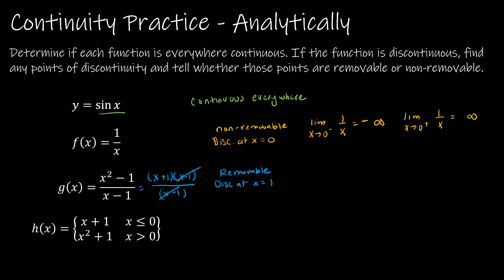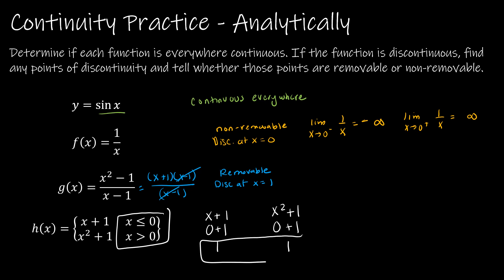To determine what happens at x equals 0, I look at what happens on the function from the left when I plug in 0 — I get 1. And what happens on the function from the right when I plug in 0 — I also get 1. Because those two things are equal, this function is going to be continuous. It was continuous to the left, continuous to the right, and the two parts meet up at the point (0, 1).